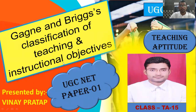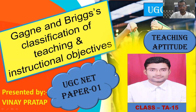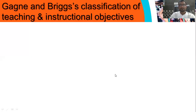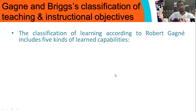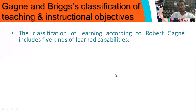Gagne and Briggs classification and teaching instructional objectives. This is our 15th class. Classification of learning according to Gagne includes five kinds of learned capabilities — five types of learning capabilities.